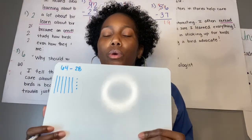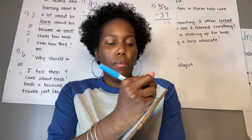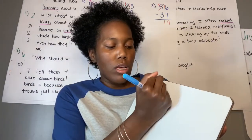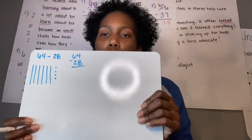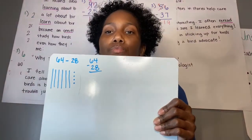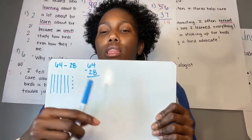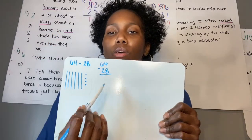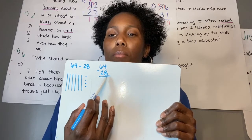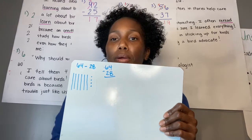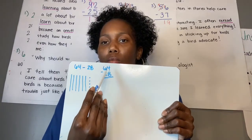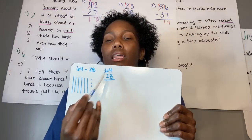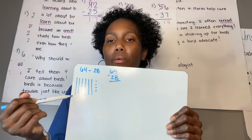But remember, we've got to borrow, because our problem put vertically would look like this: 64 minus 28. And remember, yesterday I told you, if the number on top is smaller than the number on the bottom, then we need to go next door and borrow one more. If our number in the ones column is smaller than the number on the bottom in the ones column, we need to borrow one from the next door number. Is our number on the bottom bigger or smaller? It's bigger. So we need to take one away from our 6 and add it back to our 4.